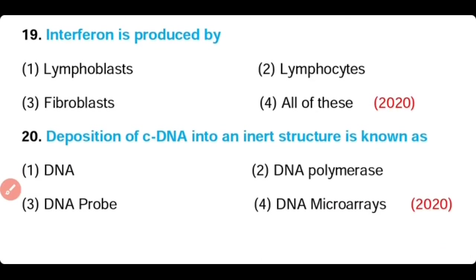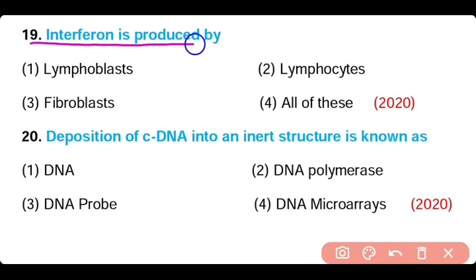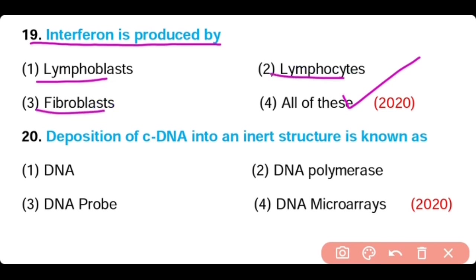Question 19: Interferon is produced by — lymphoblast, lymphocyte, fibroblast, or all of these? Option 4 is correct. Lymphoblast, lymphocyte, as well as fibroblast can all produce interferon.